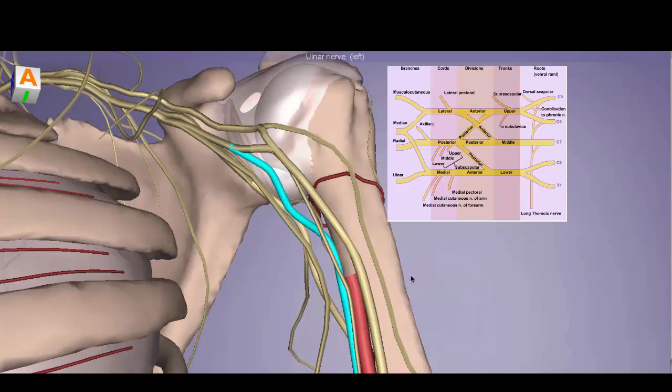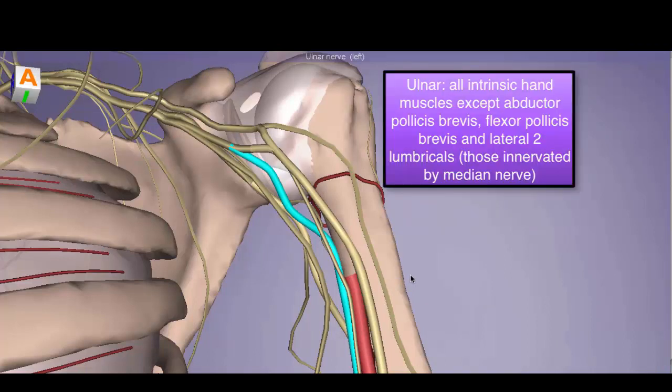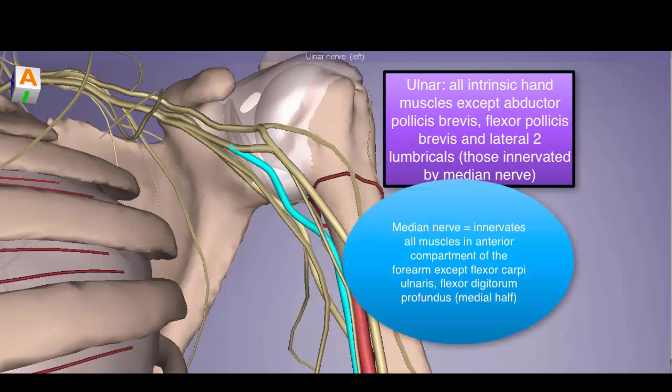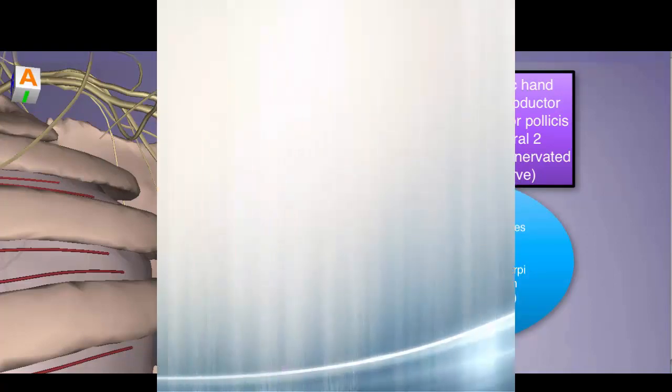The ulnar nerve descends medial to the brachial artery down the upper extremity and is a direct continuation of the medial cord. This nerve is very important when discussing the hand, because it innervates all intrinsic hand muscles except the abductor pollicis brevis, flexor pollicis brevis, and the lateral two lumbricals, which are innervated by the median nerve.